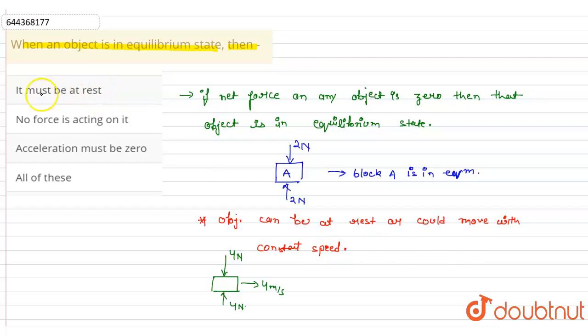So option A says it must be at rest, so as I wrote here, the option is wrong. Option B: no force is acting on it, so it is also wrong. The definition is, or we can say, equilibrium means the net force on any object is zero. So option B is wrong.